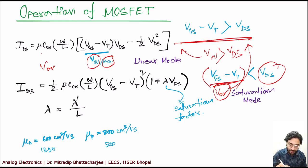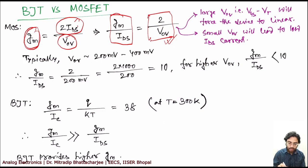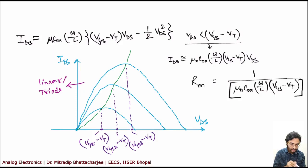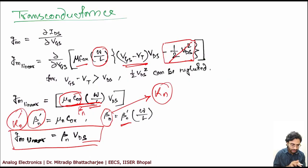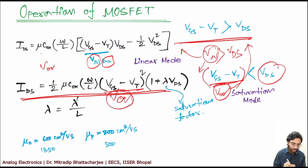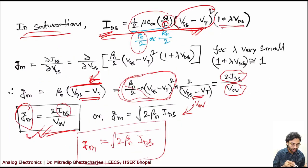What if you make VOV very small? If you make VOV very small, it will lead to a low IDS value. The saturation current IDS depends on VOV — if you make VOV very small, IDS will go down. And if IDS is going down, GM will go down, because in the saturation region GM is a function of IDS. Low IDS means low GM, and low GM means low gain.